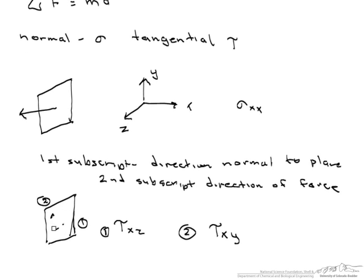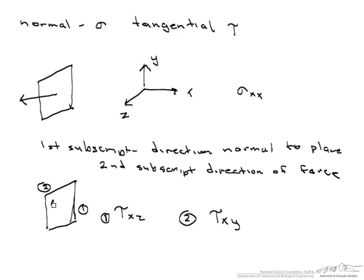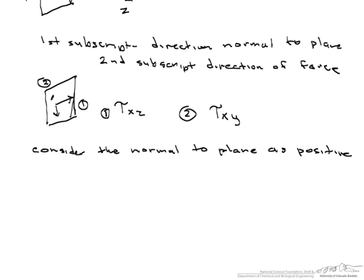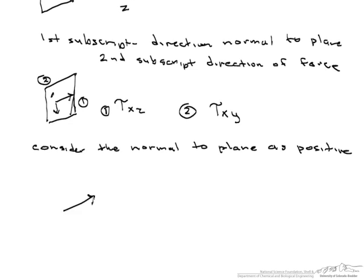You might look at these and say why are these stresses positive when they are in the negative direction. And the reason for that is we consider the normal to the plane as the positive direction. So what that means in this particular case is we shift our coordinate system such that the positive coordinate system looks like this. So this is x, this is y, and this is z. So we basically rotated the axis.